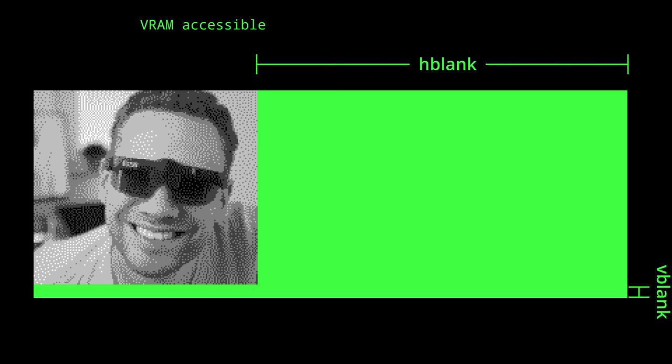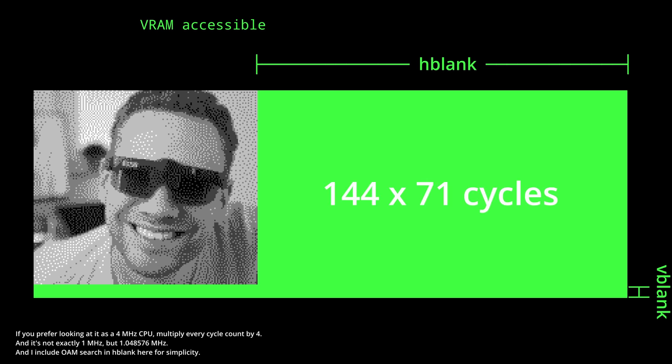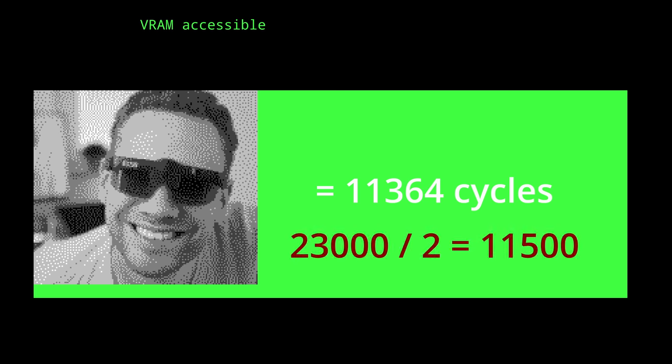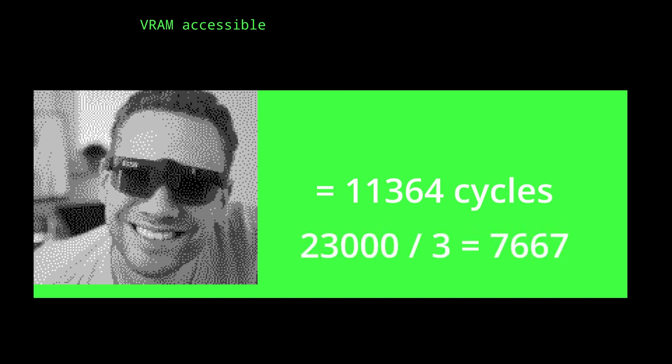The PPU draws the image like an old CRT — line by line, left to right, top to bottom. While doing so it reads from video RAM and does not allow the CPU to write to it. The CPU can only write to video RAM during a short H-blank period between each line, and during a slightly longer V-blank period between frames. When only drawing background tiles, I get 68 microseconds or 71 cycles per line across 144 lines, plus about 1,140 cycles during V-blank — a total of 11,364 cycles per frame. Since 23,000 cycles don't fit into two frames, I need three frames per image. At 60 Hz refresh, that gives me 20 FPS for the video stream. On the bright side, using three frames per image leaves headroom and allows nicely organized transfers.